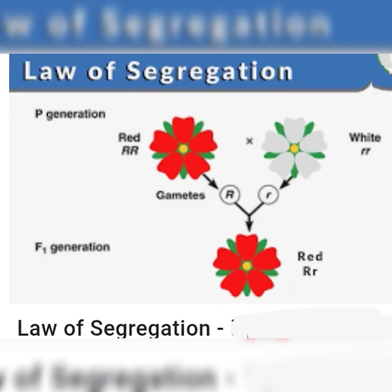Number 2 is the Law of Segregation. It means that the two members of a pair of factors separate during the formation of gametes. They do not blend — they separate into different gametes. That is why it is known as the Law of Segregation.